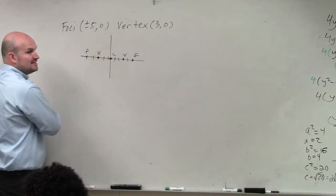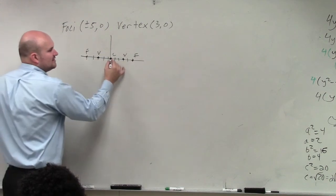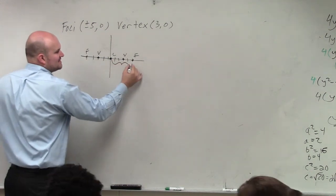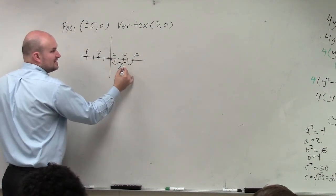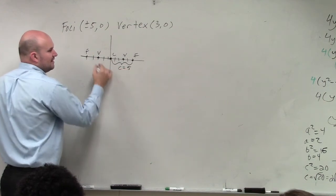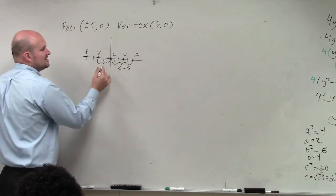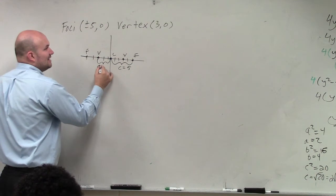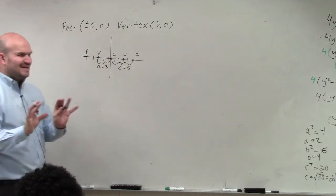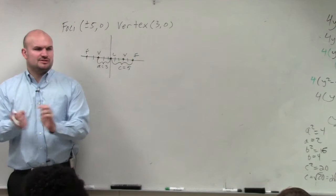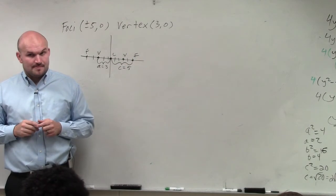Based on this information, let's figure out all the information we have. We have the distance from the center to the foci, which is C, which is equal to 5. And we have the distance from my center to my vertex, which is A, which in this case is equal to 3. Again, we're talking about distances, not direction, so don't worry about the negative and the positive.